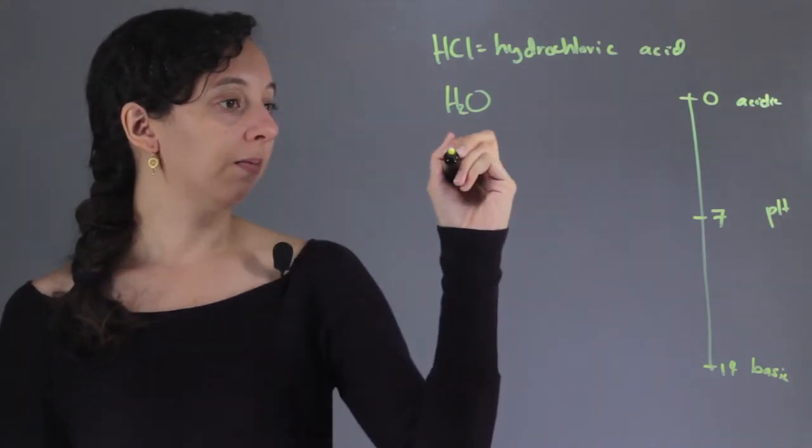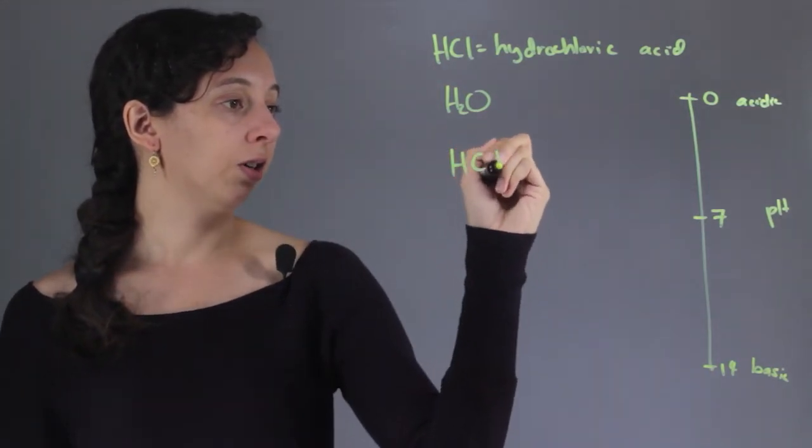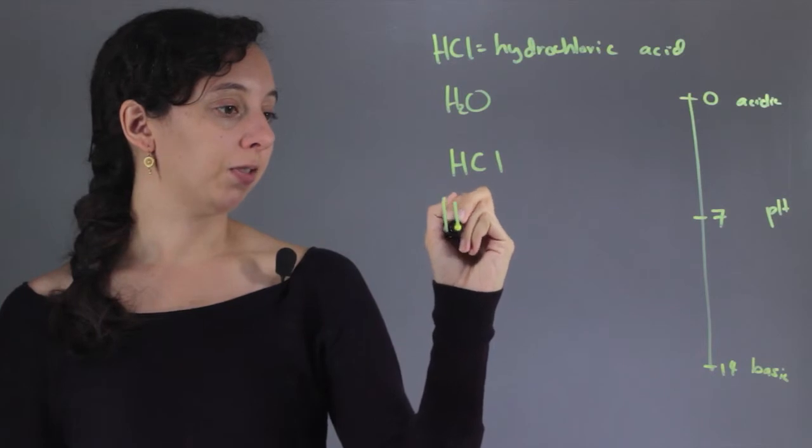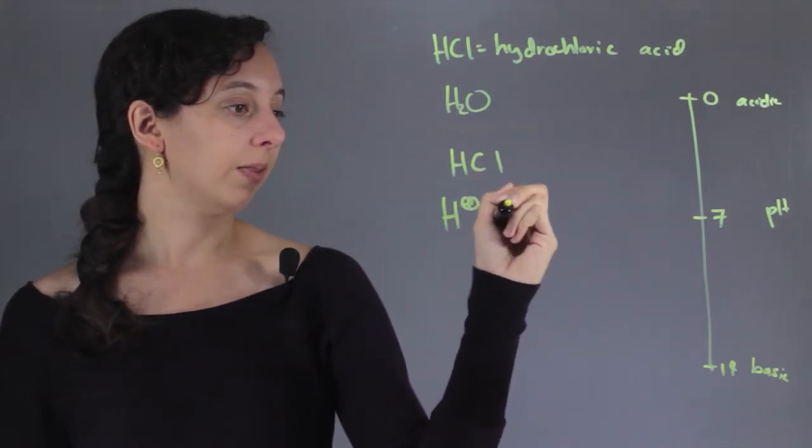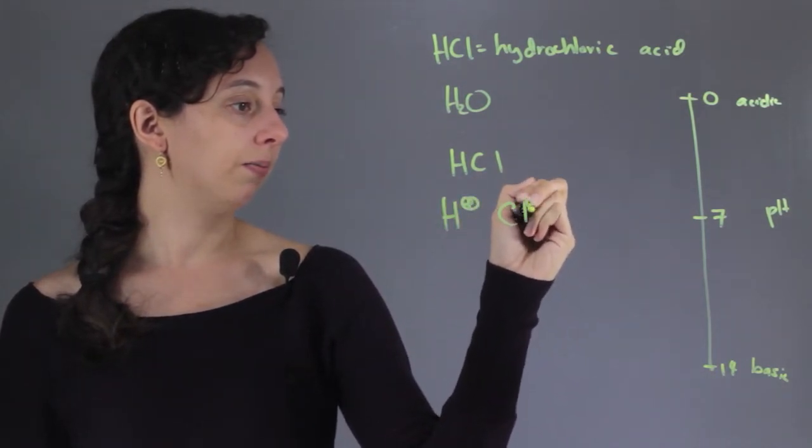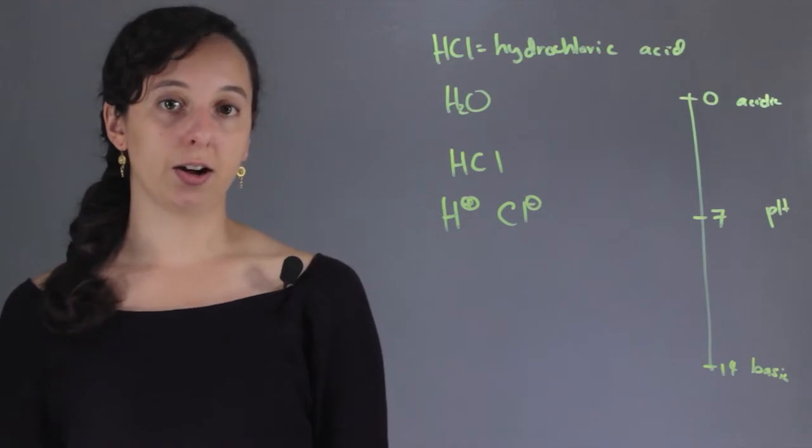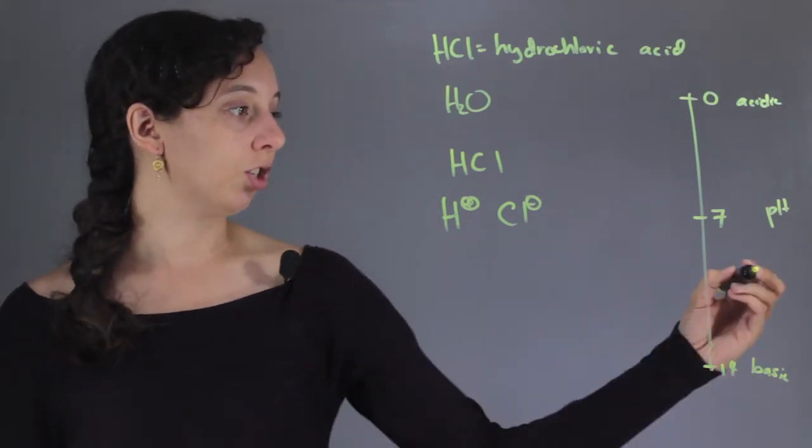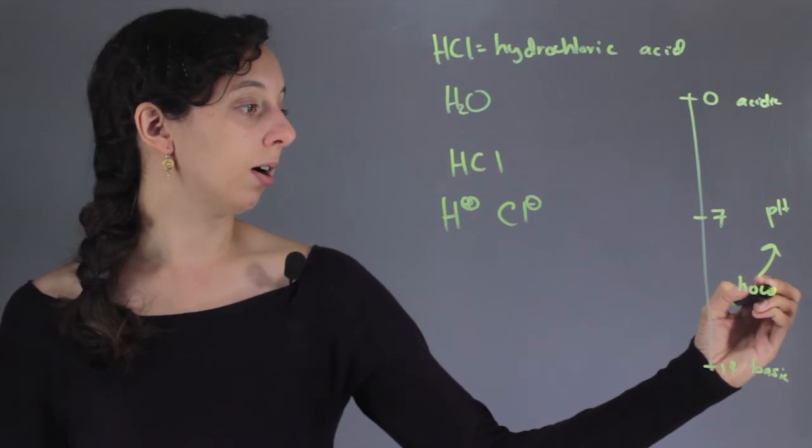So why? Well HCl in solution will actually break up into positively charged hydrogens and negatively charged chlorines. And the pH scale is actually just a measure of how many free hydrogens there are.